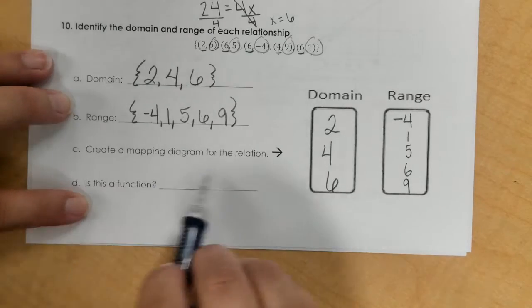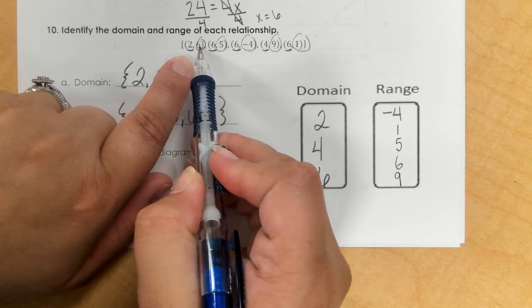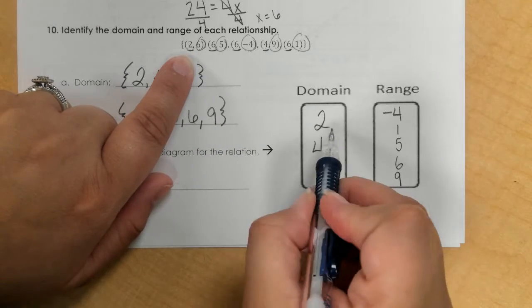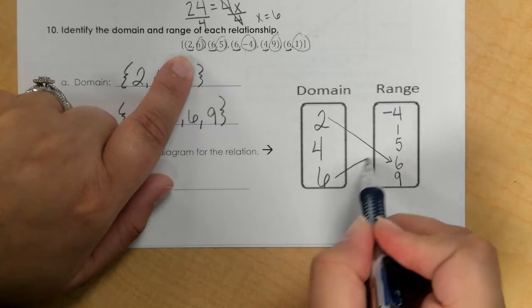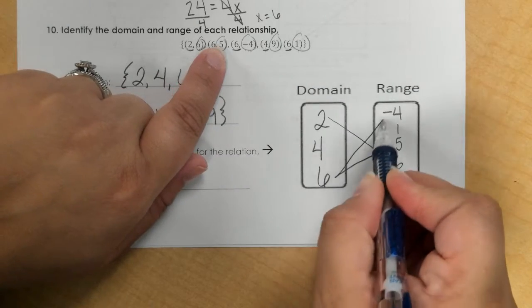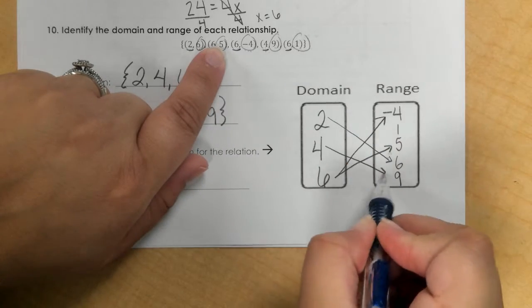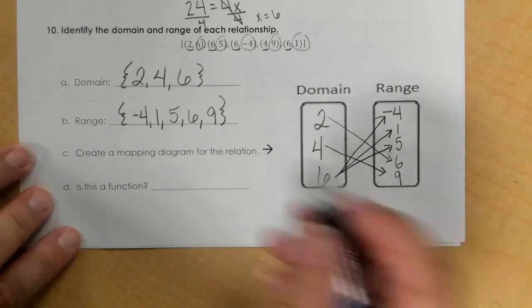To create the mapping diagram, I already listed my domain and range. It says 2 goes to 6, so I draw 2 to 6, 6 to 5, 6 to negative 4, 4 to 9, and 6 to 1.